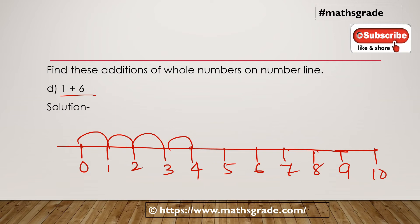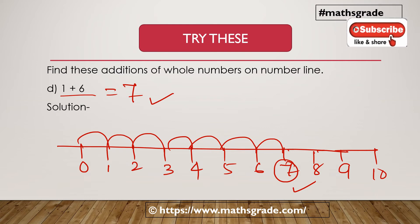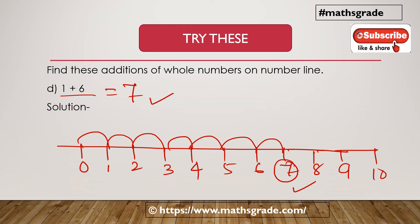...3, 4, 5, 6 — reaching 7. So 1 plus 6 is 7. This is the representation of the addition of numbers 1 and 6, that is 1 plus 6, on the number line, and we have 1 plus 6 is equal to 7.